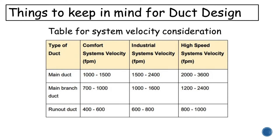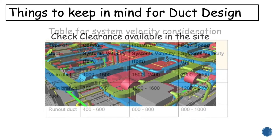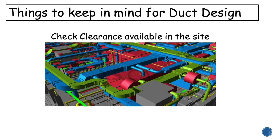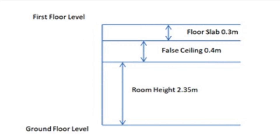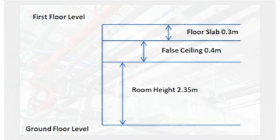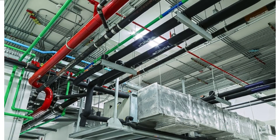This table gives you the data to follow for different types of building applications. For example, for a residential building you can consider comfort system data to design the duct. Also check how much clearance is available on site to run the duct — check false ceiling clearance and other services like plumbing and electrical systems to decide the height of the duct.